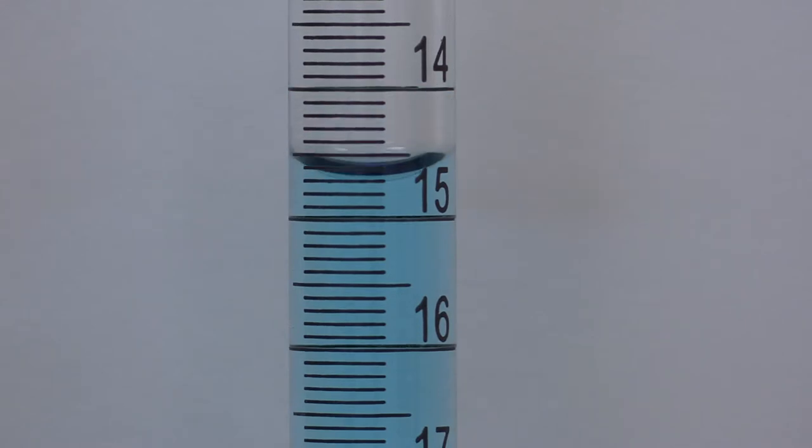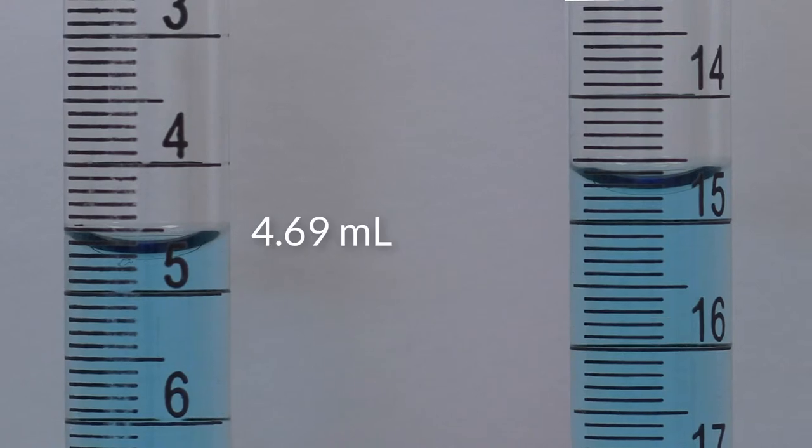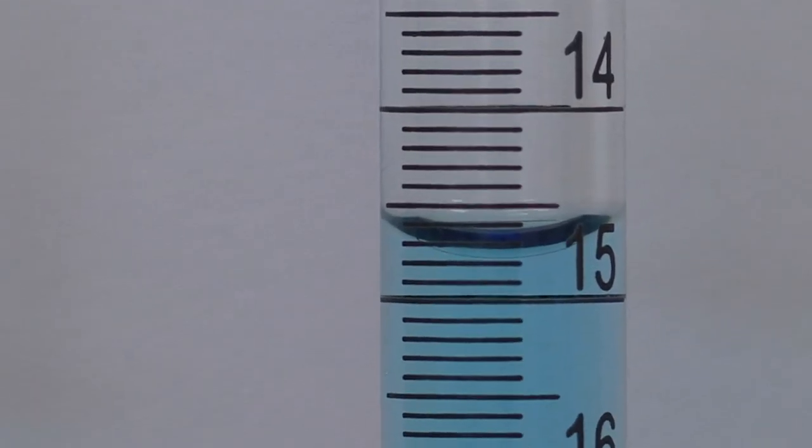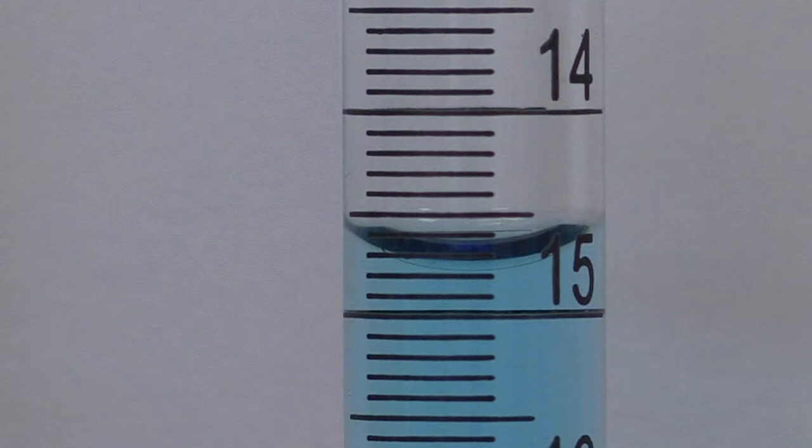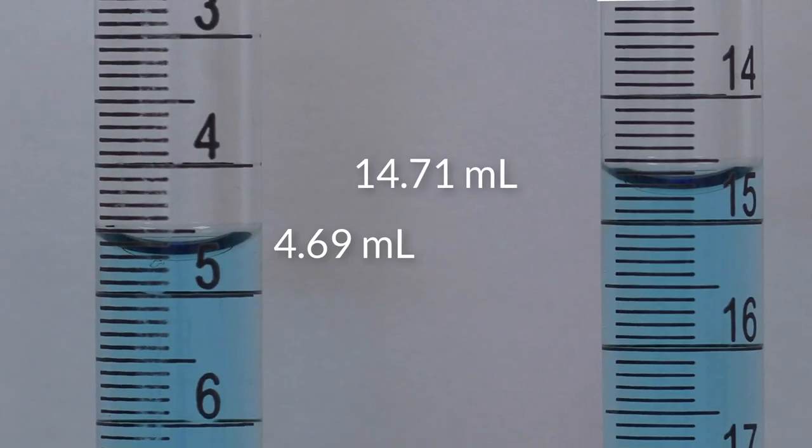We started the titration with a volume reading on the burette of 4.69 milliliters. When the titration is completed, the reading on the burette is 14.71 milliliters. To find the volume of the titrant added, in this case sodium hydroxide, we subtract the two values which gives 10.02 milliliters.